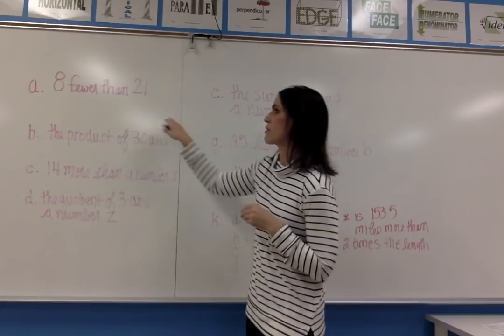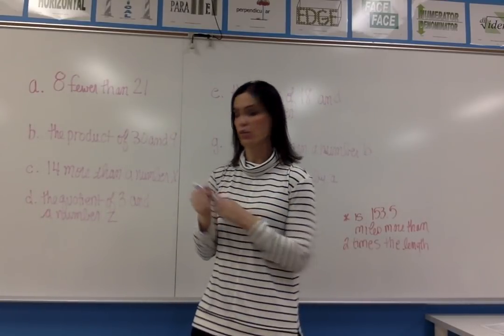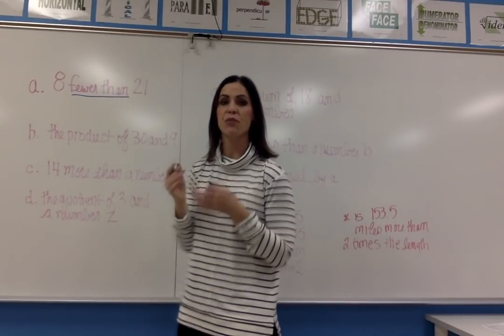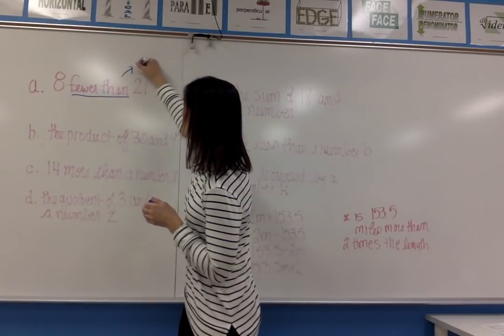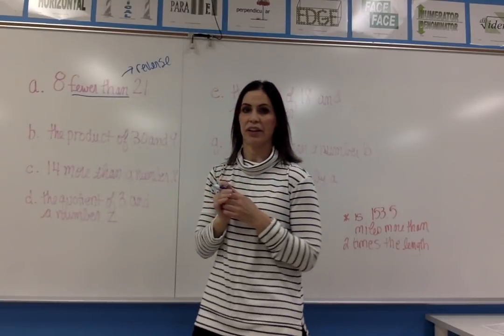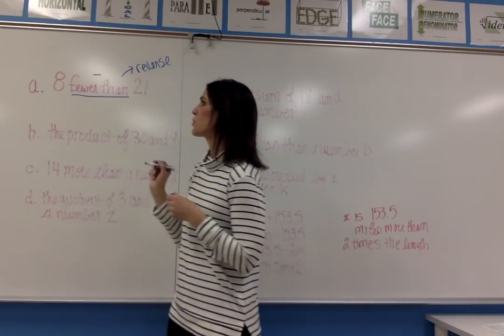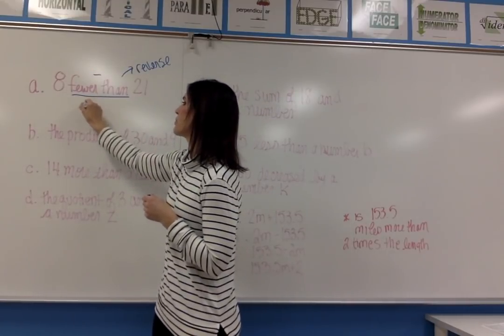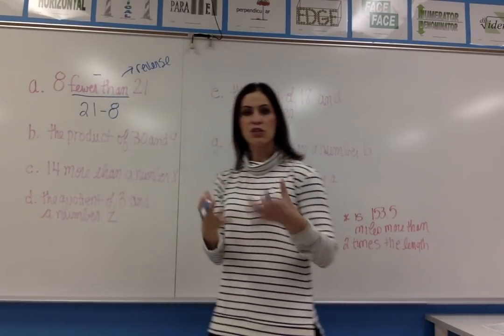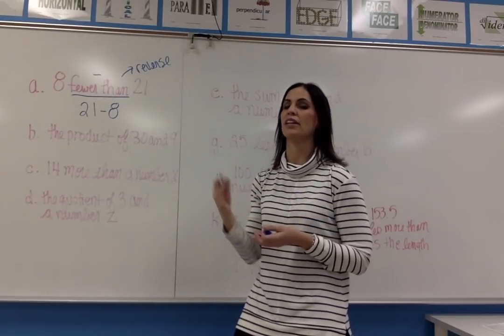We're going to start with example A: 8 fewer than 21. This is one of the phrases where you reverse the order of values. Fewer than means to subtract, but I'm going to put 21 first. So starting with 21 and taking 8 fewer than that, I have to subtract 8 from 21.